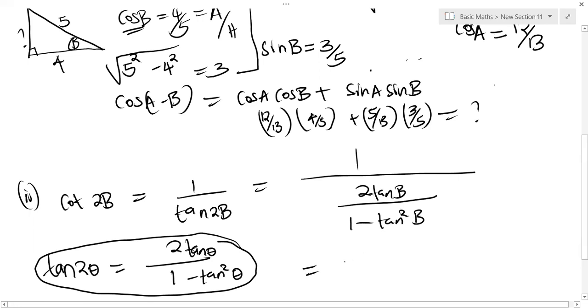Now this translates to 1 divided by the whole of this is the same as multiplying by the reciprocal. So I'll have 1 minus tan squared B, all this divided by 2 tan B.